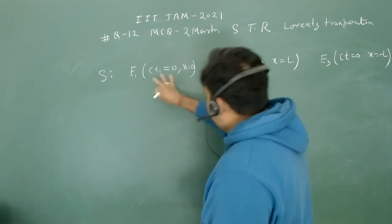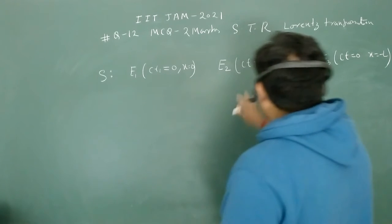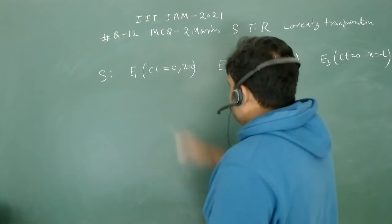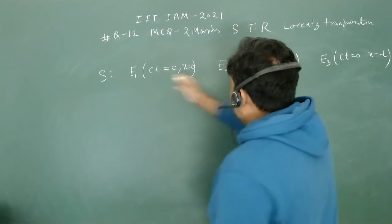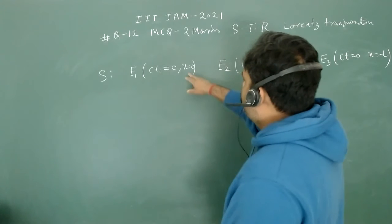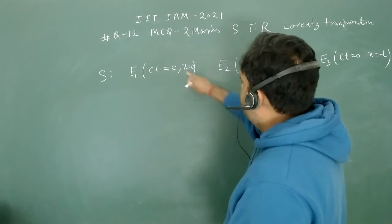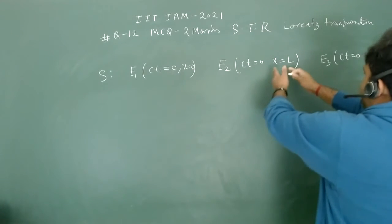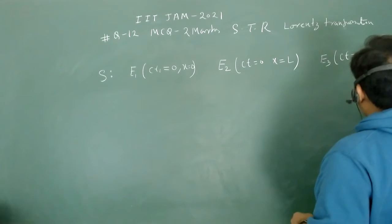The problem is very interesting. There are three events E1, E2, and E3, and the time coordinate and space coordinate of all these three events are given. Fortunately, the time coordinate of all three events are at zero, and the space coordinate is x=0 for the first one, x=l for the second one, and x=-l for the third one.